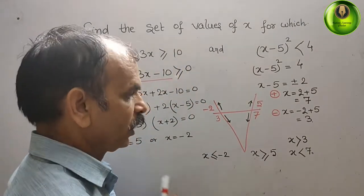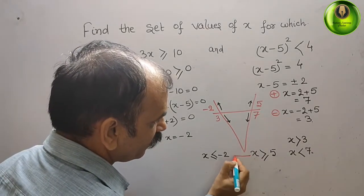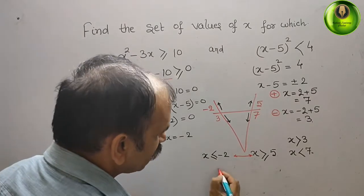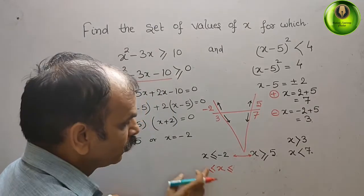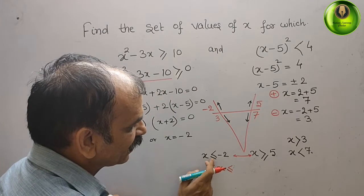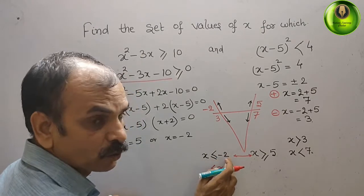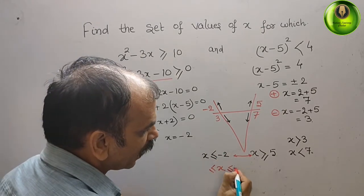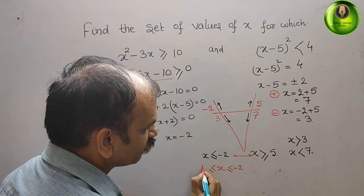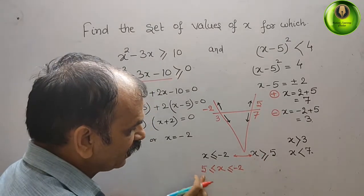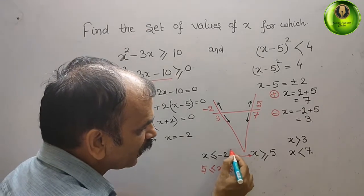Now we check the ranges for intersection. First combination: x less than or equal to minus 2, and x less than or equal to minus 2 — these overlap but we check with the second set. x greater than or equal to 5 means 5 on the right side. Since there is no relation between x less than or equal to minus 2 and x greater than or equal to 5, these two have no combination.